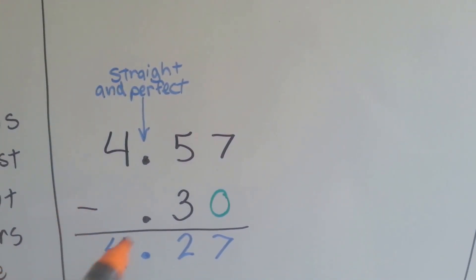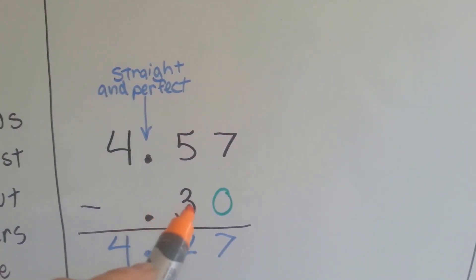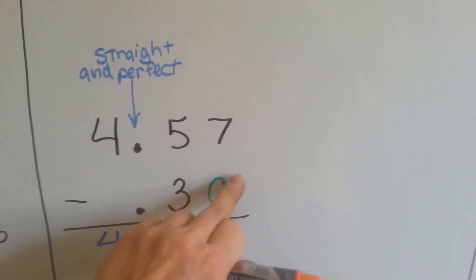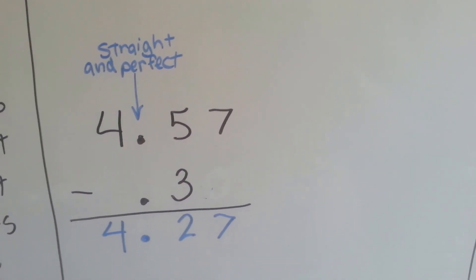If we're missing a zero from the second number, we can put it in or we can just ignore it and just drop the 7 down.